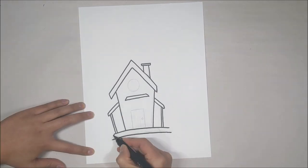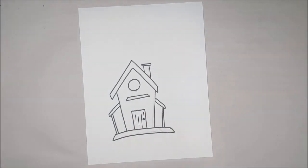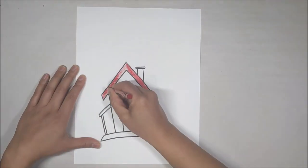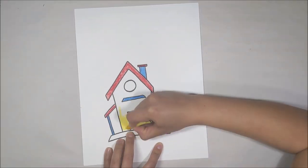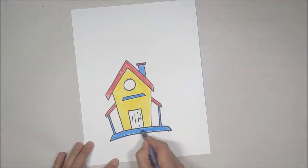Now give it a nice outline with a black marker and erase all the pencil marks. Now give your bird house some color. You can use color pencils, markers or any other medium that you have available.